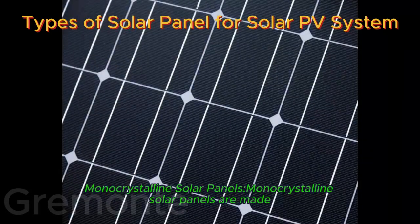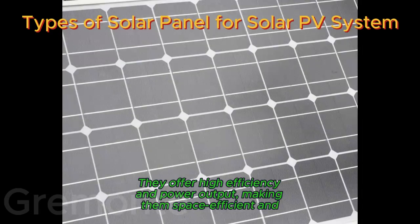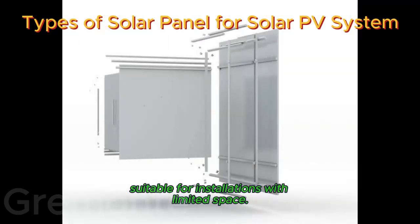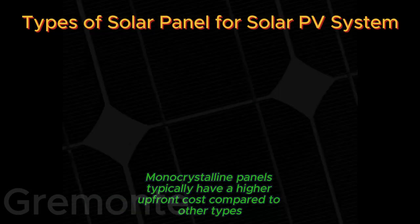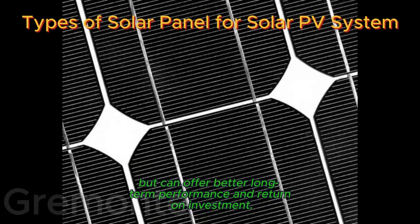1. Monocrystalline solar panels. Monocrystalline solar panels are made from single crystal silicon, resulting in a uniform dark color. They offer high efficiency and power output, making them space efficient and suitable for installations with limited space. Monocrystalline panels typically have a higher upfront cost compared to other types, but can offer better long-term performance and return on investment.